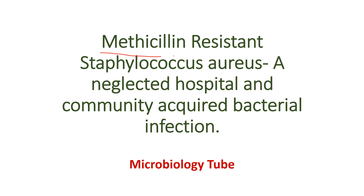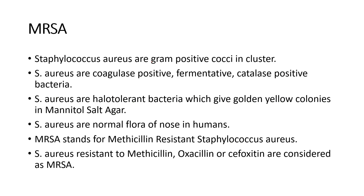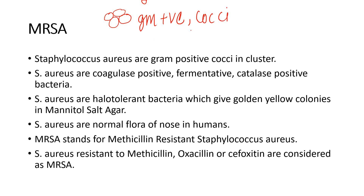First of all, Staphylococcus is a Gram-positive coccus, which means it will be blue in color on Gram staining, and it forms clusters — a cluster-type arrangement. What we have to remember is that staphylococci are Gram-positive cocci found in clusters.